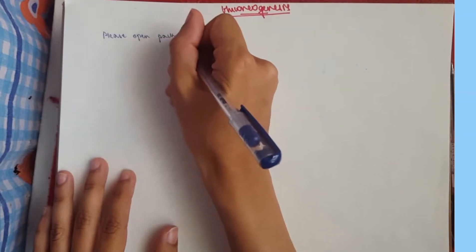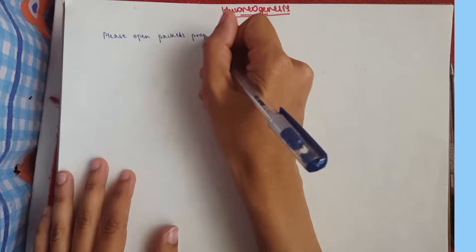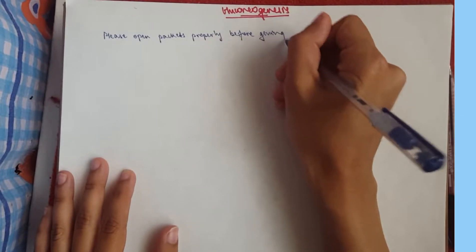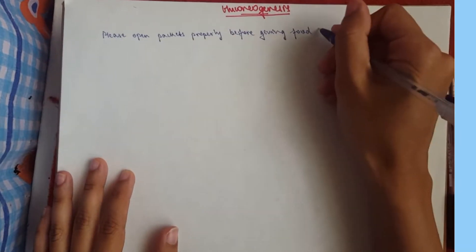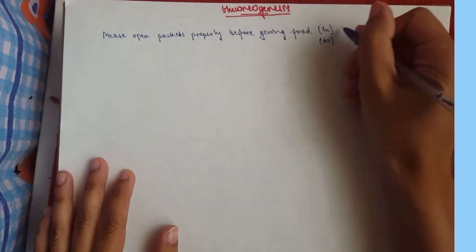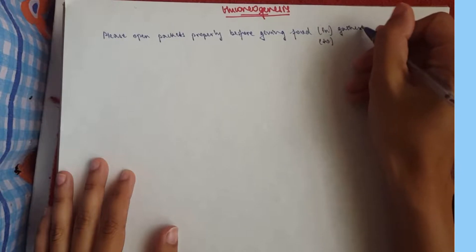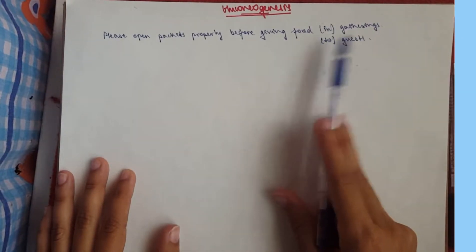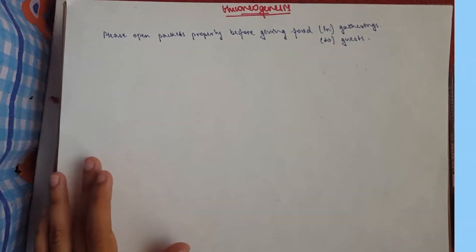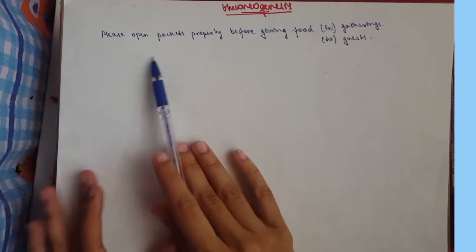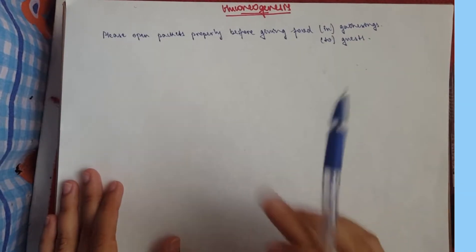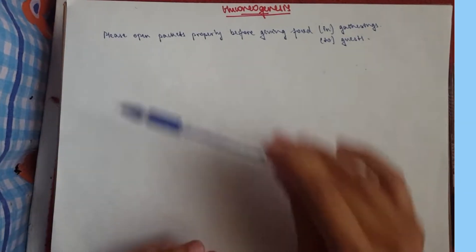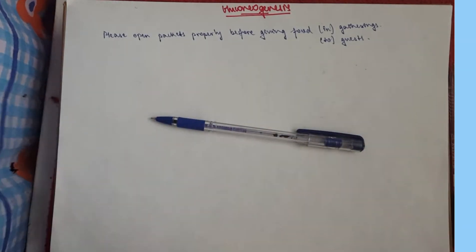The mnemonic is: Please Open Packets Properly Before Giving Food — and here you have two options: you can go with 'In' or 'To', and either 'Gatherings' or 'Guests' — so: Please Open Packets Properly Before Giving Food In Gatherings, or Giving Food To Guests. This mnemonic covers the substrates and products, not the enzymes, because enzymes sometimes take the name of their substrates or products and that would require too many mnemonics.